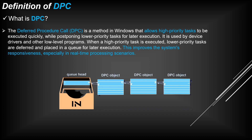Let's understand this better with a diagram. We have DPC objects — each DPC object has a different priority; essentially DPC objects are tasks. The first DPC object has high priority, the second normal priority, and the third low priority. DPC will execute the task with the highest priority, and at the same time move the tasks with lower priority into a queue to execute them later. That's the concept of DPC.